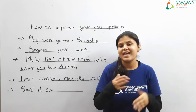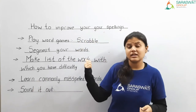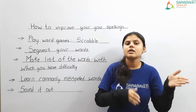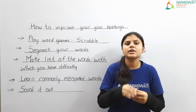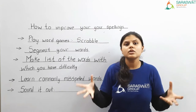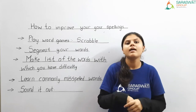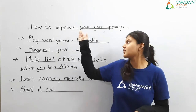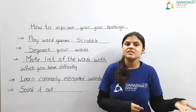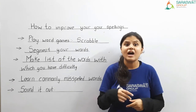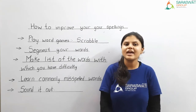The last technique is: sound it out. Sound out the word, and with the help of that you can also learn the spellings. These are the few techniques with the help of which you can improve your spellings and work better. Now there are a few rules also which you need to keep in mind, and we are going to move forward to that.